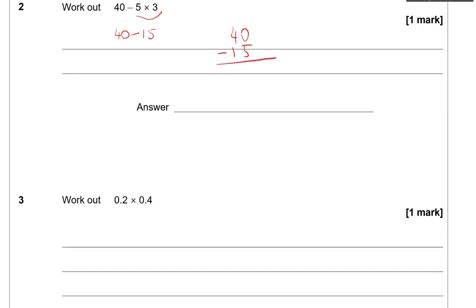We need to take away 5 from the 0, so that means we need to borrow 1 from the 4. So this becomes 3 and this becomes 10. 10 take away 5 gives us 5. 3 take away 1 gives us 2. So 25 is the answer.